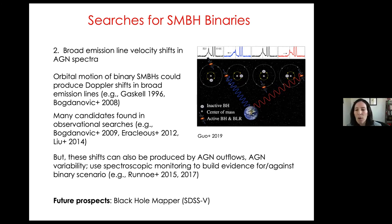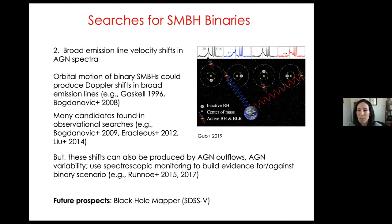The most promising future outlook here is the Black Hole Mapper campaign for Sloan-5, just getting off the ground. It will provide multi-epoch optical spectra for several hundred thousand X-ray sources — a large spectroscopic catalog with a long time baseline that you can use to look for velocity shifts that might indicate supermassive black hole binaries.